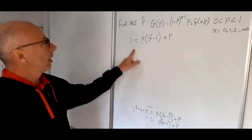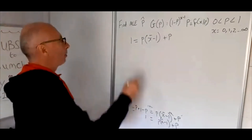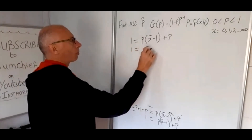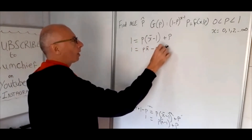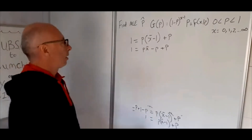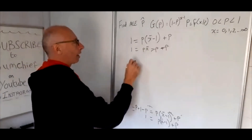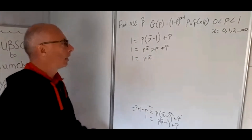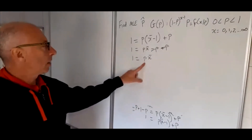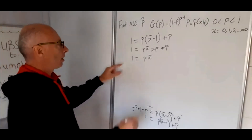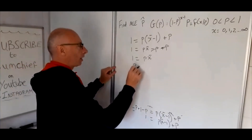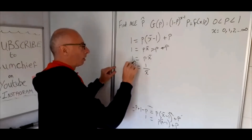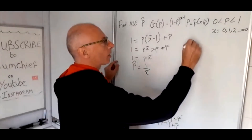Expanding: 1 equals P x̄ minus P plus P. The minus P and plus P cancel, leaving 1 equals P x̄. Dividing both sides by x̄, we get P̂ equals 1 over x̄. That's our maximum likelihood estimator.